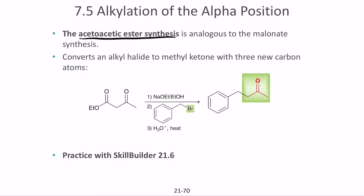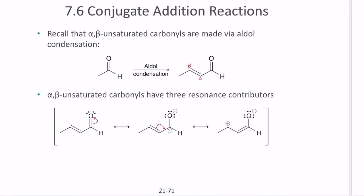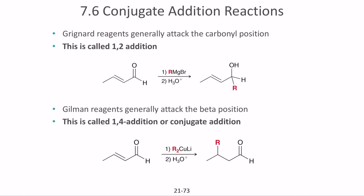Acetoacetic ester synthesis is similar to malonic ester synthesis, except that instead of forming a carboxylic acid, it produces a ketone — specifically a methyl ketone. Whereas malonic ester synthesis adds two carbons, acetoacetic ester synthesis adds three new carbon atoms. So bromine is removed from the alkyl halide and three carbons are added to the structure.